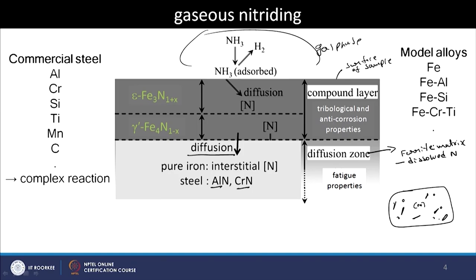If the steel contains elements with a strong affinity for nitrogen — such as aluminium or chromium — they require only a very small amount of dissolved nitrogen before forming nitrides like AlN or CrN. These nitride precipitates form within the diffusion zone: a BCC iron matrix with dissolved nitrogen atoms and alloying element nitride particles. This ferrite matrix with dissolved nitrogen and nitride precipitates is called the diffusion zone in a practical nitriding steel. Above this, at higher nitrogen content, gamma prime iron nitride (Fe4N) forms, followed by epsilon iron nitride.